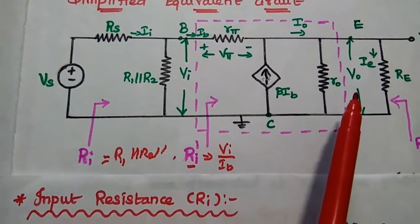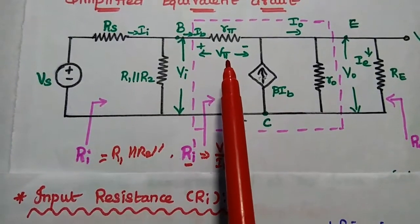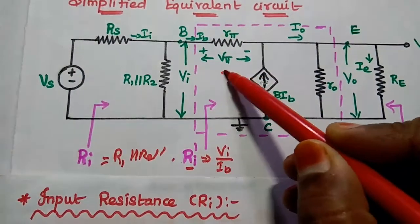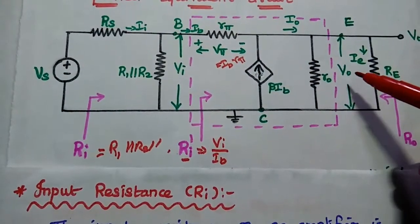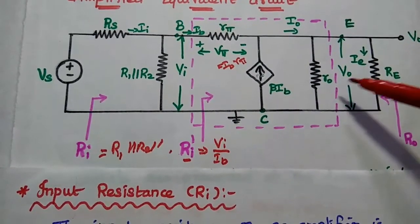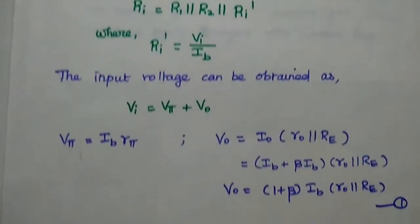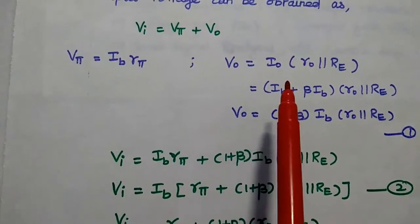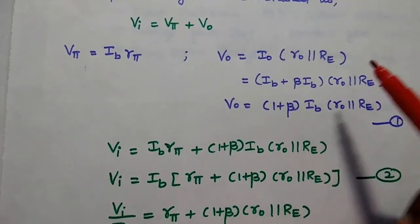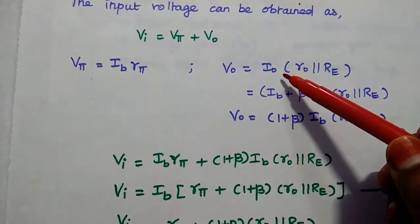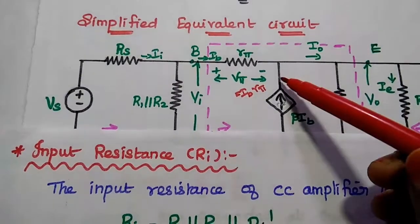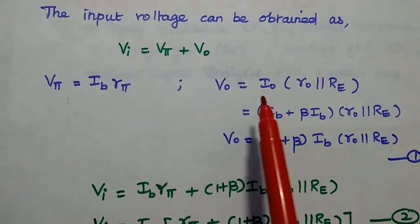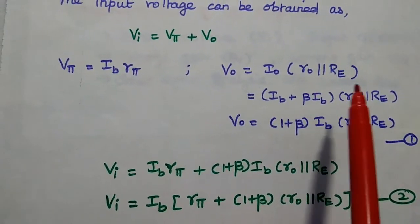Vi is equal to Vpi plus Vo. Vpi is equal to Ib multiplied by Rpi — that is the voltage drop across Rpi. Vo is equal to Io multiplied with the parallel combination of Ro and Re. The output current Io is equal to the sum of Ib and Beta·Ib. So Io equals (1 + Beta)·Ib, and Vo equals (1 + Beta)·Ib·(Ro parallel Re).